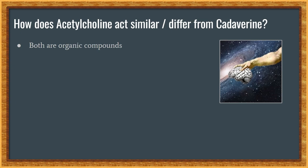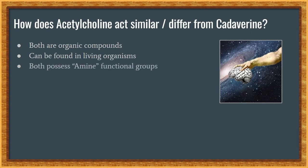Now, how does acetylcholine relate to cadaverine? To start, they are both organic compounds and can be found in living organisms, even if just in scarce amounts. They both possess amine functional groups and are naturally produced.